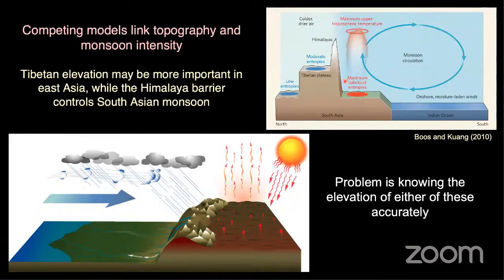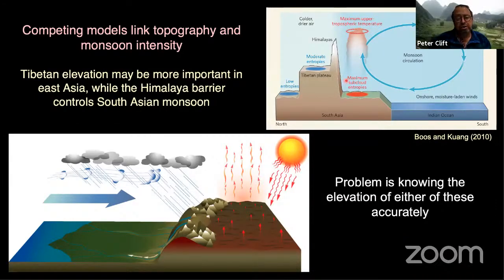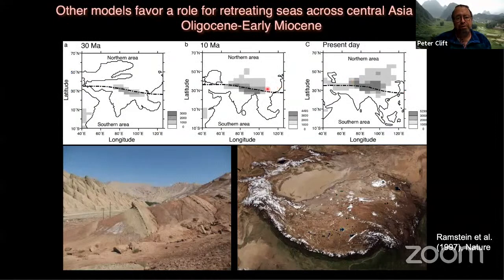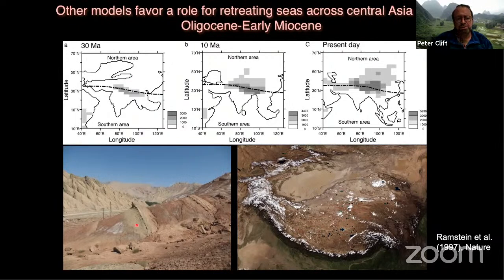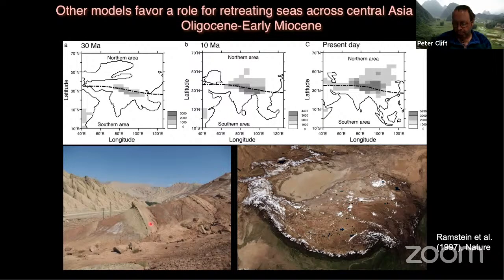It's not just orogenic topography controlling the strength of the monsoon. Modeling studies suggest that the shrinkage of the so-called Paratethys Ocean, which dominated central Asia back in the Oligocene, also played a role. As this ocean contracted, it allowed the land to heat to a much greater extent than when covered by shallow seas, helping to intensify the monsoon system. The last marine bed in the Tarim Basin marks where the Paratethys retreated.